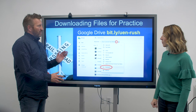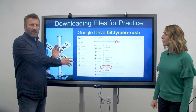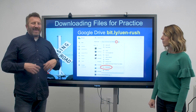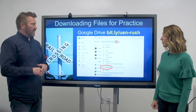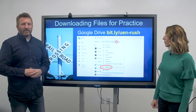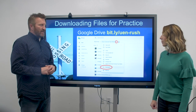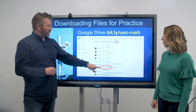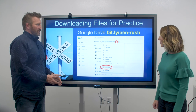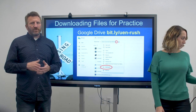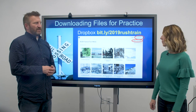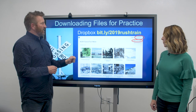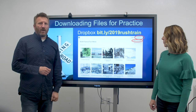If a teacher wants to use the same videos we just talked about — a short video about the Golden Spike — you can get all of those files and a script handout for your students. Just go to bit.ly/uen-rush. You'll see a Google Drive folder come up. Download it by clicking the dropdown arrow next to the title of the folder, then choose Download and it puts all those files onto your computer ready to go. If you don't use Google Drive, we also have the same files in a Dropbox folder. Click Download, then Direct Download — the shortened URL for that is bit.ly/2019rushtrain.